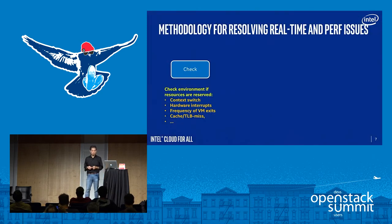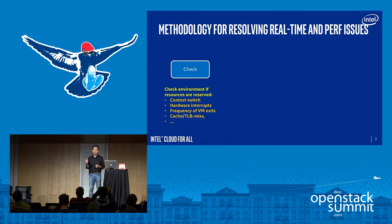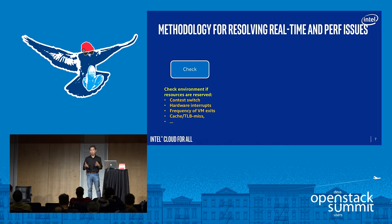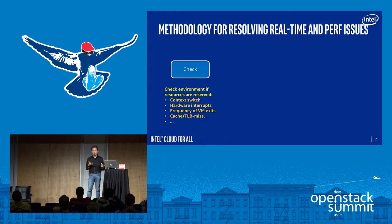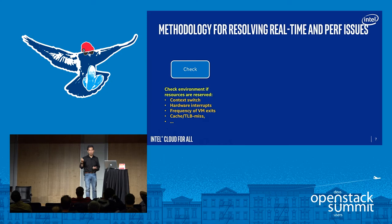I'll talk about kind of a methodology — a structured way of handling problems. First and foremost, prevention is very important. Before jumping into debugging, you really want to prevent and check that the runtime environment is what you are expecting — good enough or not. I'll talk about how you're going to check — for example, context switches, how many interrupts you're getting, how frequent the VM exits, or sometimes cache misses if you're looking at very tight real-time like microsecond-level things.